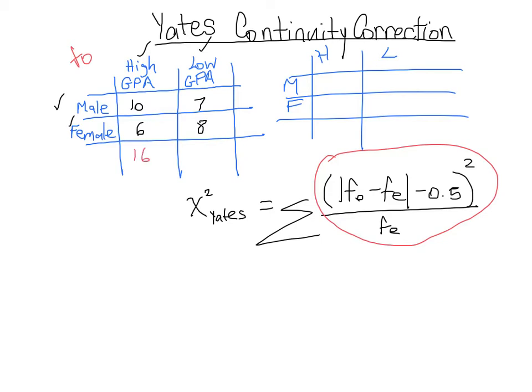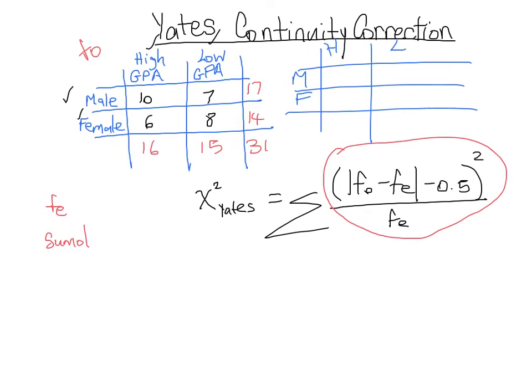So again it would be high GPA, low GPA, male and female, just like our observed frequency table. And of course we know we need the sums in order to find our fe values. So we just added everything up to get our sums. And recall that in order to figure out fe values we need to do the sum of the row over total sum times the sum of the column, which means—and I'll do one just to remind you—if we wanted to fill in that value.